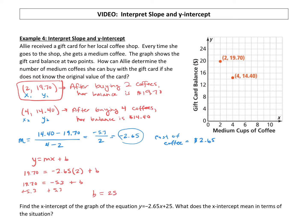So if I go over to the graph, if my y-intercept is 25, I know that's (0, 25). So (0, 25) is right here on the graph. What does that mean? Zero is our x, so if she has bought zero coffees, what is the balance on her card? The balance on her card is $25. So what that means is that her starting balance of the gift card was $25.